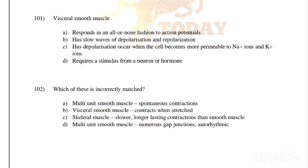Visceral smooth muscle: responds in an all-or-none fashion to action potentials; has slow waves of depolarization and repolarization; has depolarization that occurs when the cell becomes more permeable to sodium and potassium ions; or requires a stimulus from a neuron or hormone. Correct answer is option B, visceral smooth muscle has slow waves of depolarization and repolarization.